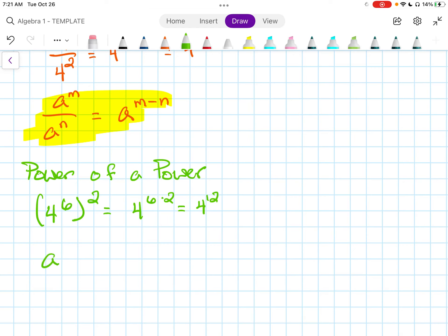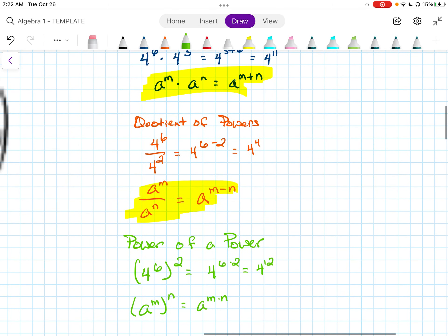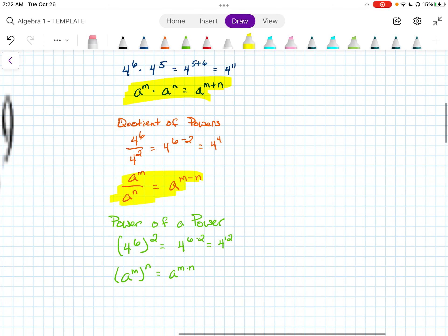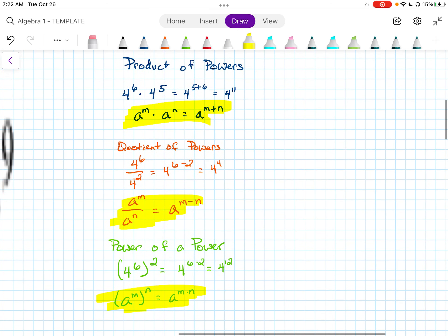Using algebra, we would say if we had something like A to the M to the N, that would be A to the M times N. We need to make sure that we have these rules here.